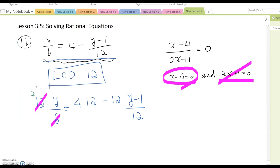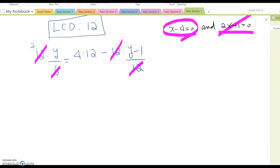12 times y over 6 equals 4 times 12 minus 12 times y minus 1 over 12. Simplify, and this becomes 2y equals 48 minus y minus 1. Of course we have 1 over 12, but as you know, we don't care because that's the denominator.